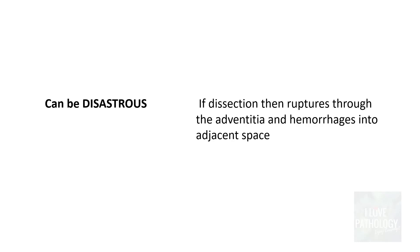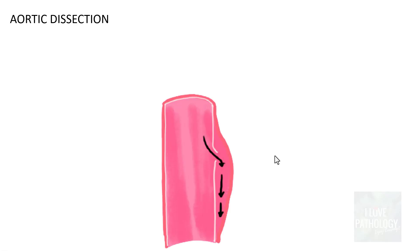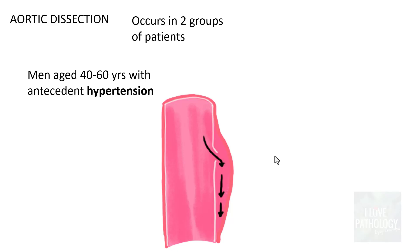This condition can be disastrous because if the dissection ruptures through the adventitia, you can have catastrophic hemorrhage into the adjacent space, causing death. Aortic dissection can occur in two groups of patients. The first group is men aged 40 to 60 years — the fifth to seventh decade of life — with antecedent hypertension. This is the most common group, occurring in around more than 90% of cases.